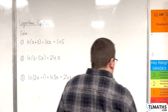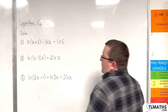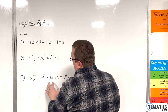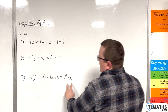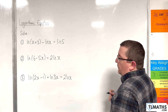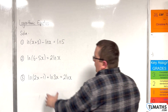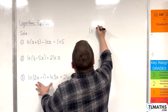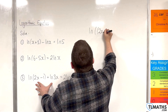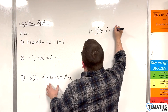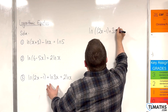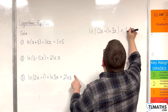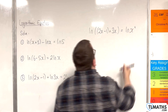For the last one, we have the natural log of 2x minus 1 plus the natural log of 3x is equal to 2 times the natural log of x. On the left-hand side we can use the product rule and write that as the natural log of 2x minus 1 times 3x. On the right-hand side we use the power rule to bring the 2 up to the power and write that as the natural log of x squared.